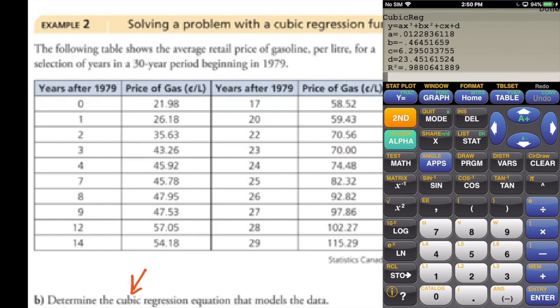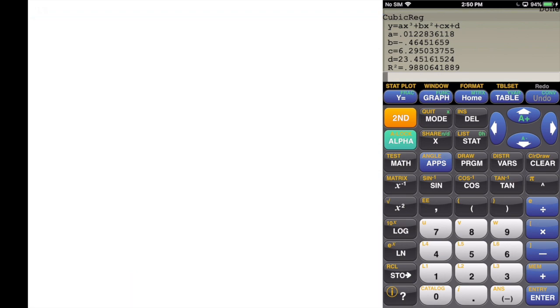I'm just going to turn over to a blank slide to write out the equation. In general, we have y equals ax cubed plus bx squared plus cx plus d.